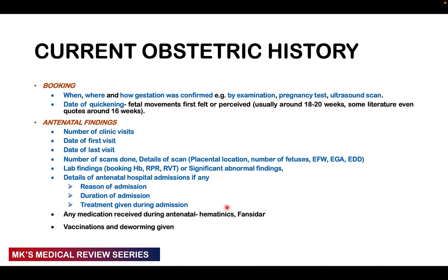Also ask about the booking — the first date of antenatal care: when and where it was done, and how the pregnancy was confirmed (examination, pregnancy test, or ultrasound scan). Ask the date of quickening — when fetal movements were first felt, roughly 16 to 20 weeks. Then ask about the antenatal history: number of visits, dates of first and last visit, number of scans, placental location, number of fetuses, estimated fetal weight, gestational age, and expected date of delivery. An early trimester scan at 8 to 12 weeks is one of the most accurate ways of determining pregnancy age.